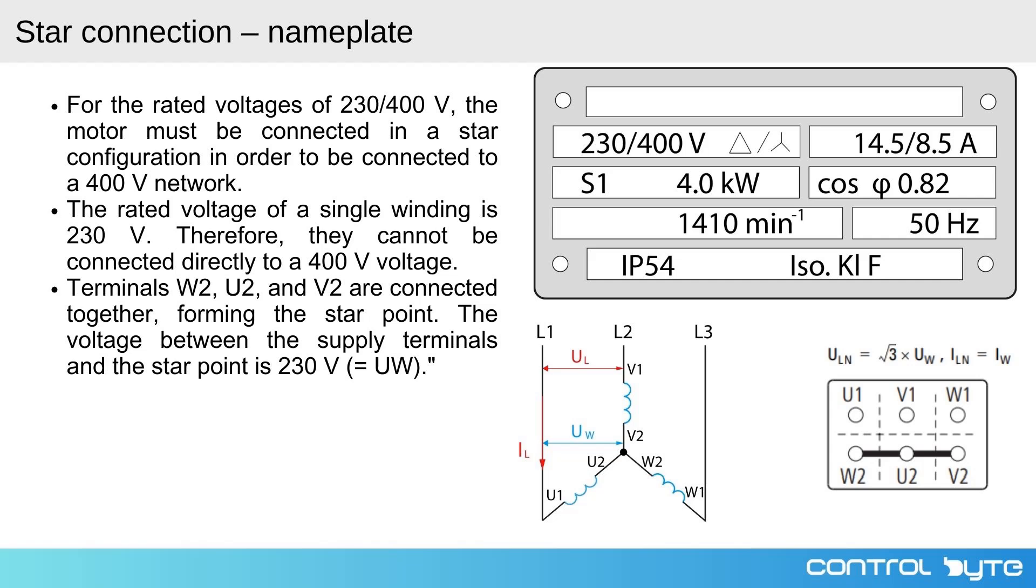Let's look at this motor's nameplate. Here we see the voltage ratings listed as 230/400 volts. This indicates that for the motor to operate correctly on a 400 volt supply, it must be connected in a star configuration.